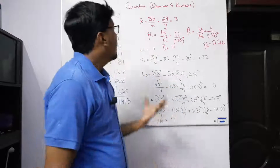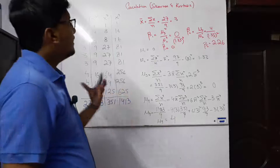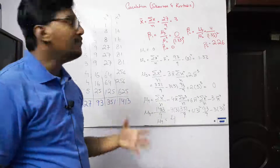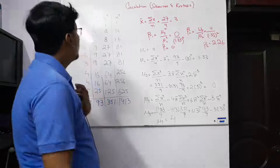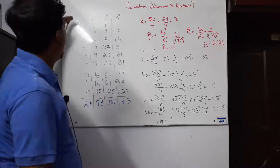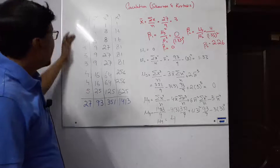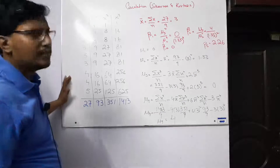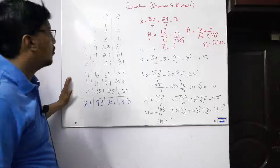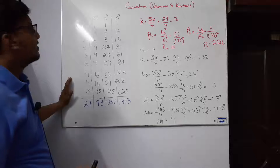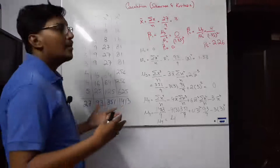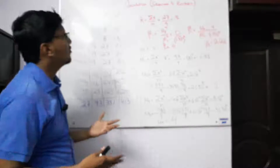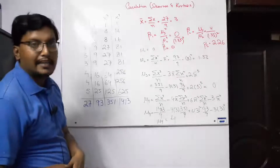We saw these concepts, but now how can we calculate skewness and kurtosis from our data? We assume the data of these 9 numbers — these can be marks or anything. We are interested in whether this 9-number data distribution is symmetrical, and what the shape is — what is the result of the skewness and kurtosis of this data.